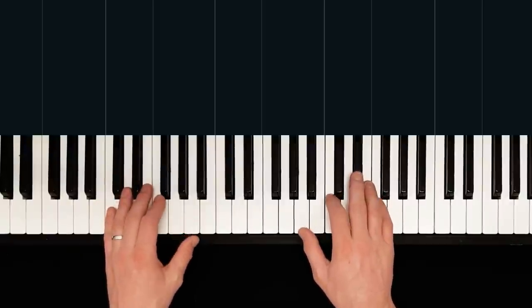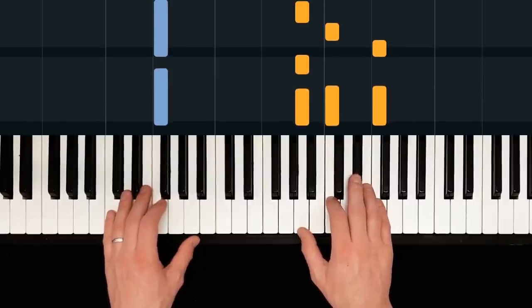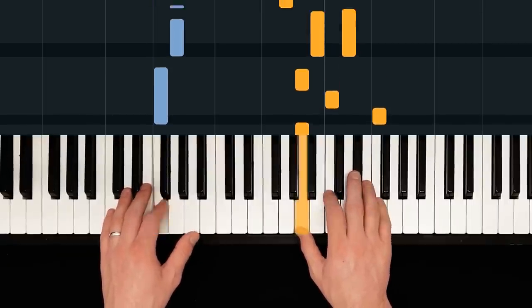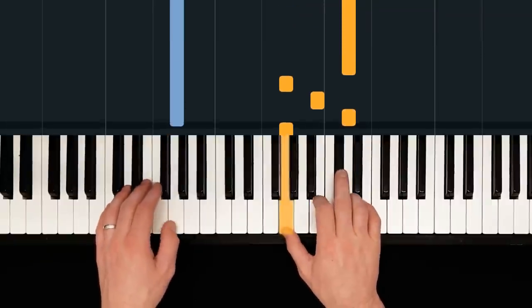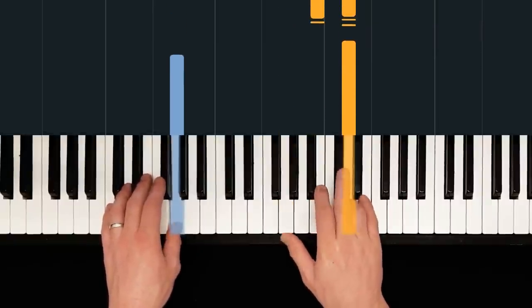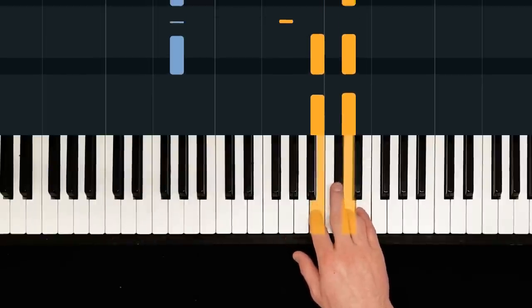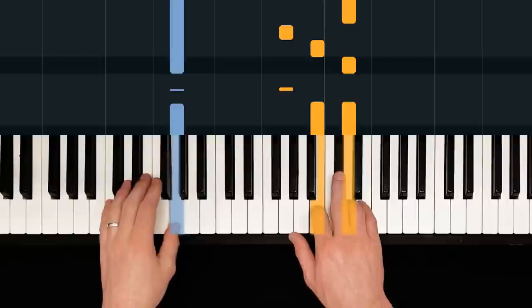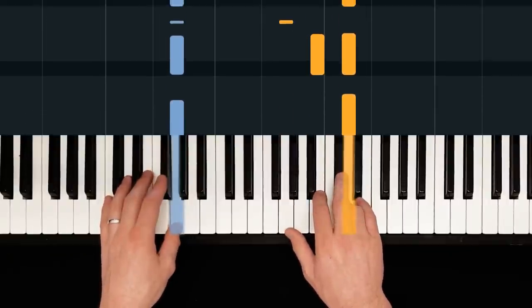This next verse, I'm only really going to concentrate on the bars that are different. Which is about 50% of them. So we start off with the same. So straight away different in G. This time we play the top half of our G major root position chord. First of all.